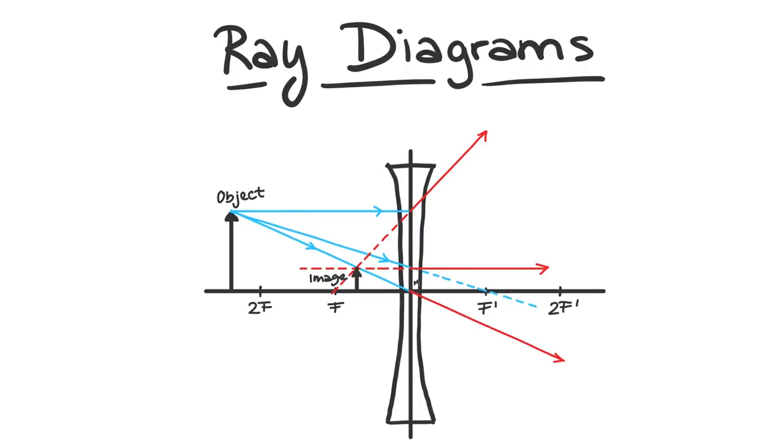Now if you are wondering how to find a focal point, as there is no intersection point, then don't worry, it's very simple. All you have to do is to extend the refracted rays. The focal point is exactly where the extensions intersect.